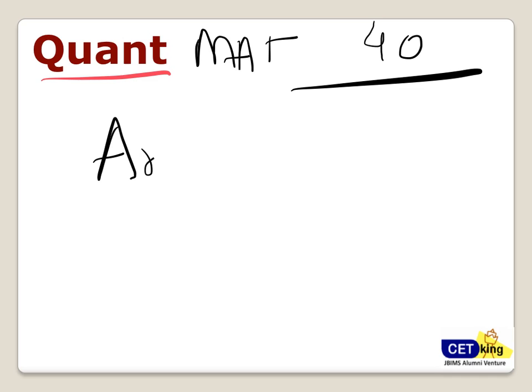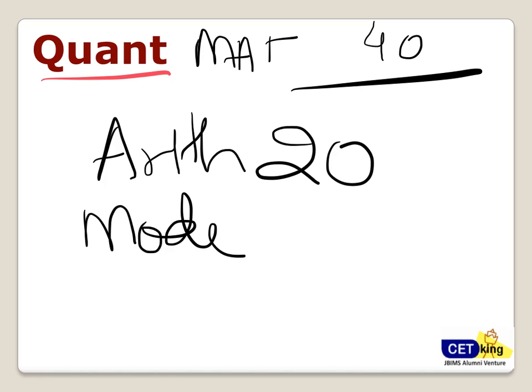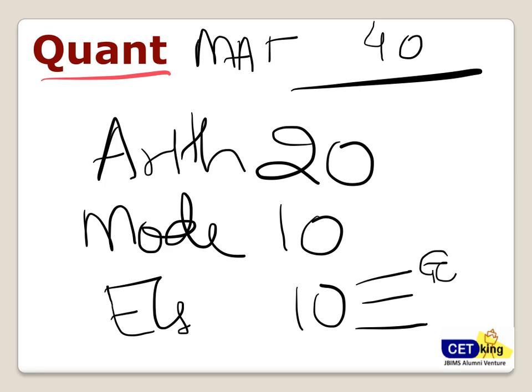Arithmetic based questions are 20. Arithmetic means time speed, time and work, interest, ratios, percentages - all these questions total 20 questions. Modern maths 10 and everything else 10. Everything else breakup: geometry will be 5 questions. Five questions from geometry that includes trigonometry, mensuration, coordinate geometry, everything.